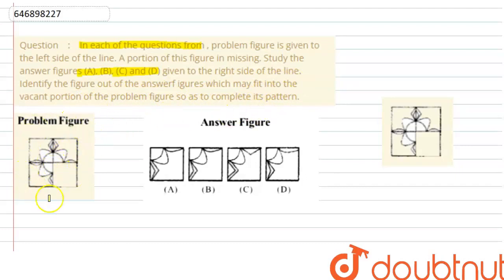Basically, on the left side, a problem figure is given to you. That problem figure is incomplete. And you have to complete that incomplete portion and tell whether the completed portion is A, B, C, or D. So you can see this portion is incomplete. I have drawn it again here for you. So let's try to complete it.